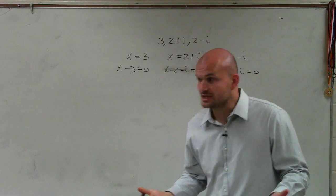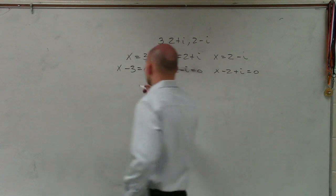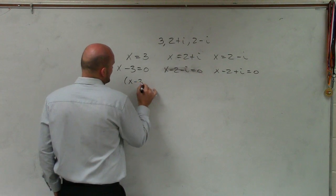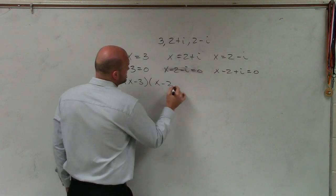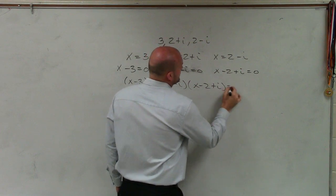Does everybody understand? All I did was subtracted them or added them to the other side. Now they're set equal to zero. Now I can rewrite them as the zero product property, which would be all set equal to zero. So I can write them as (x - 3) times (x - 2 - i) times (x - 2 + i) equals zero.